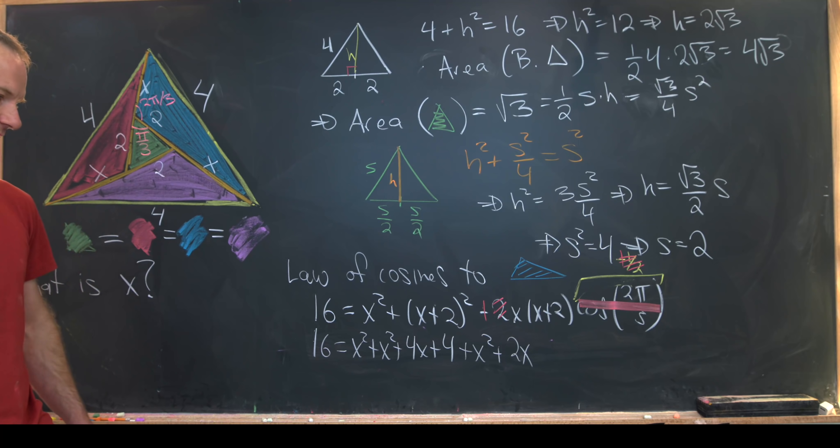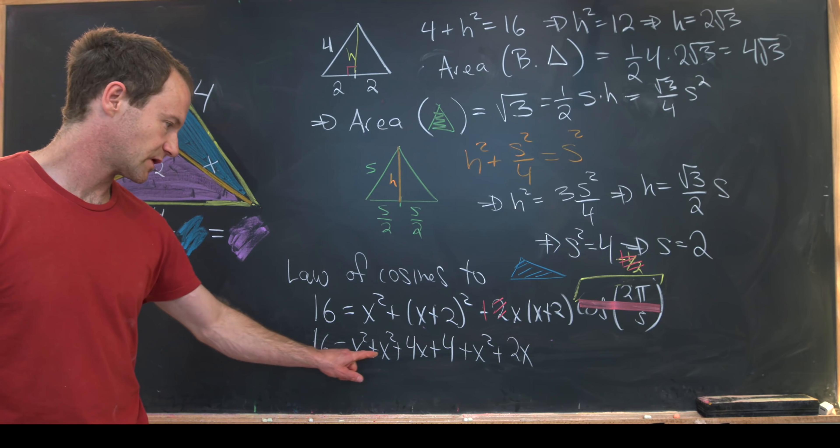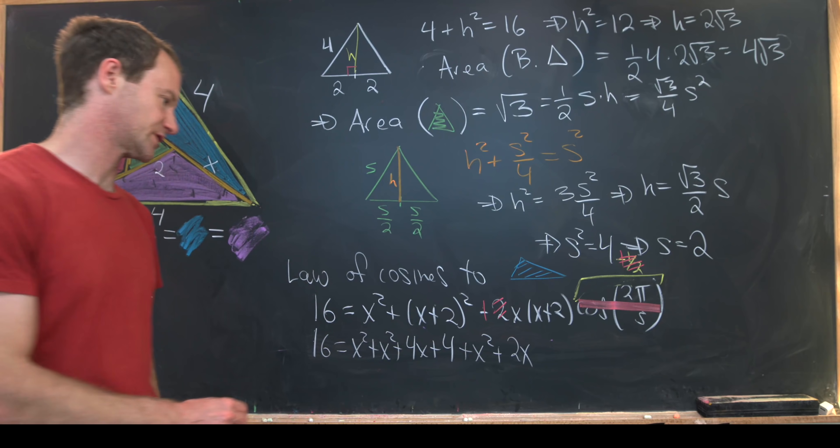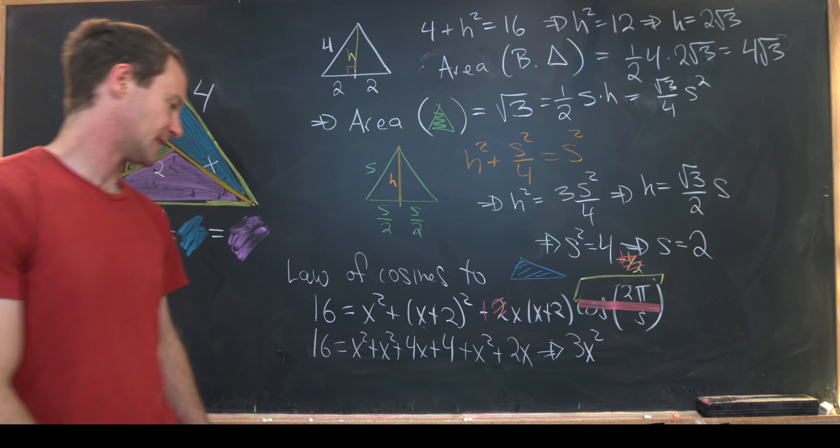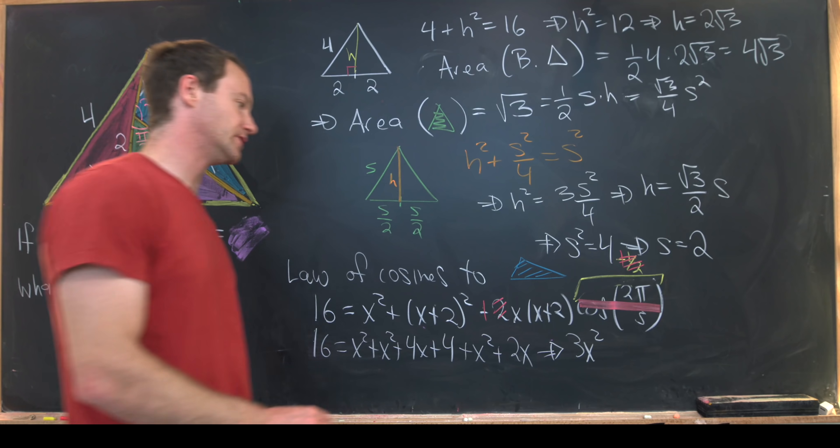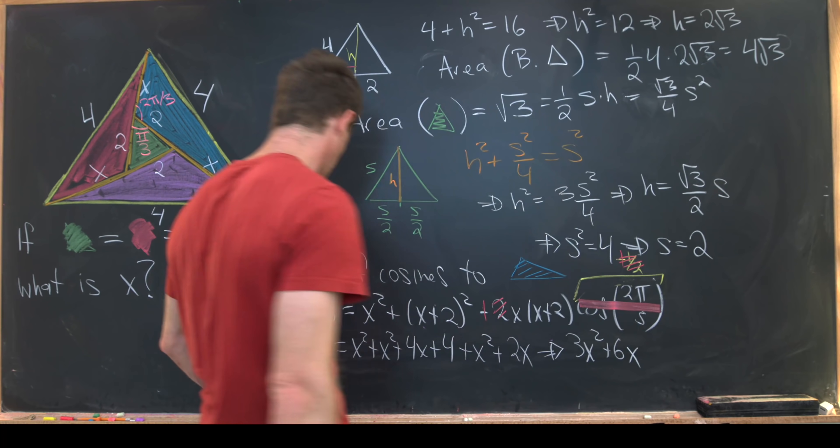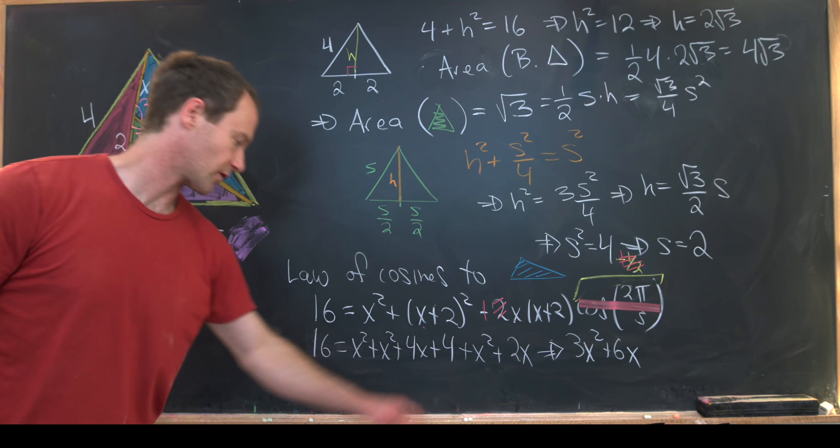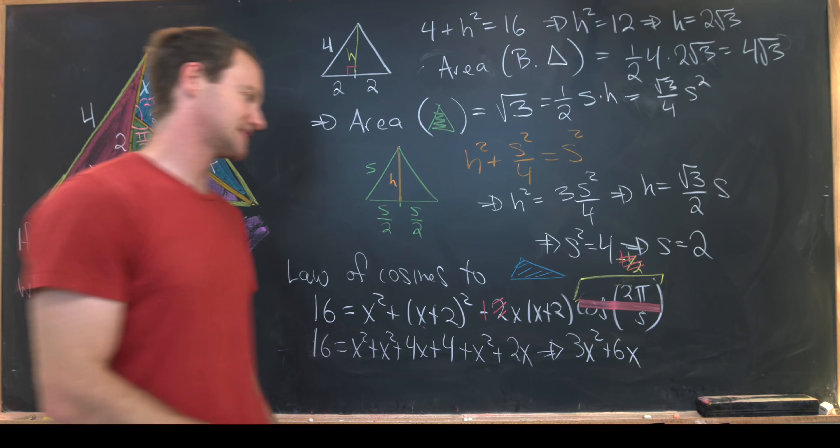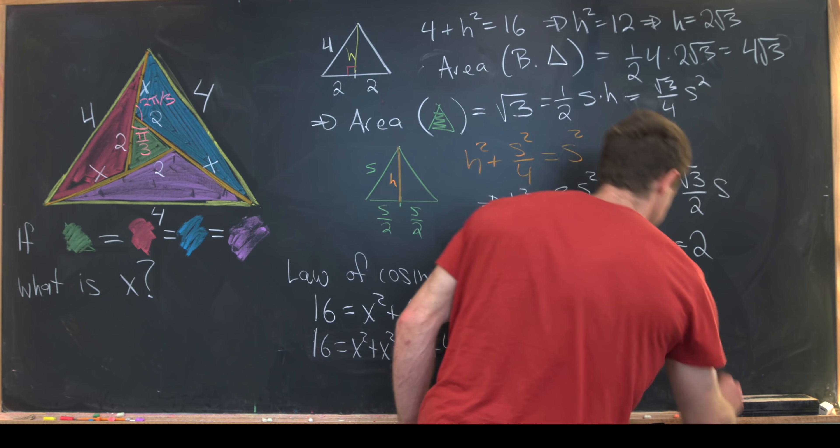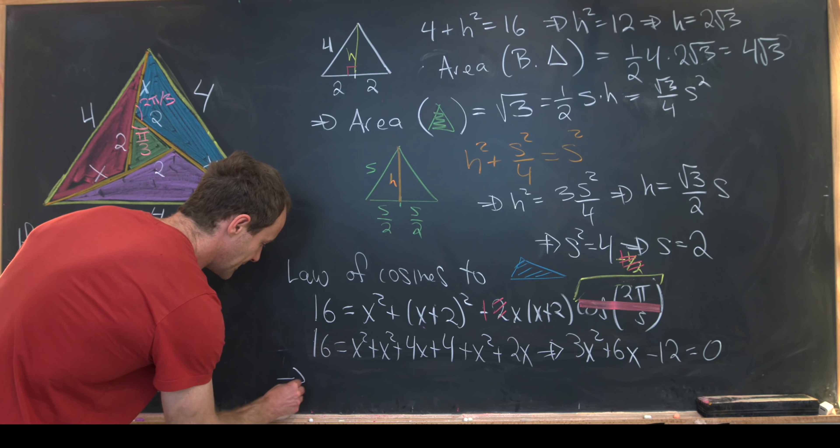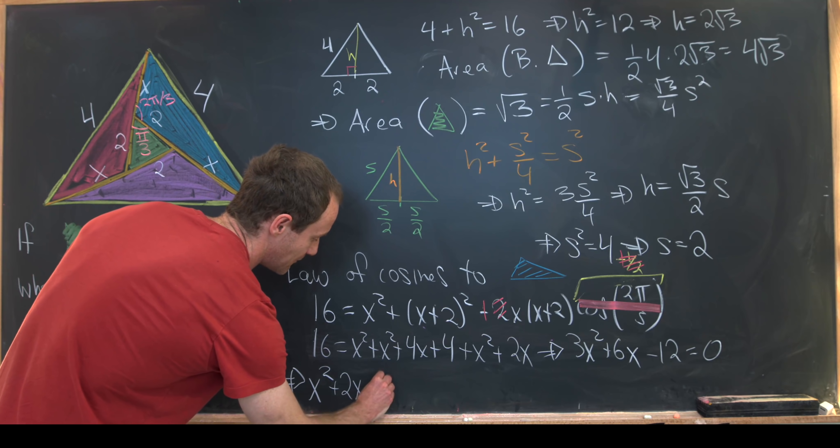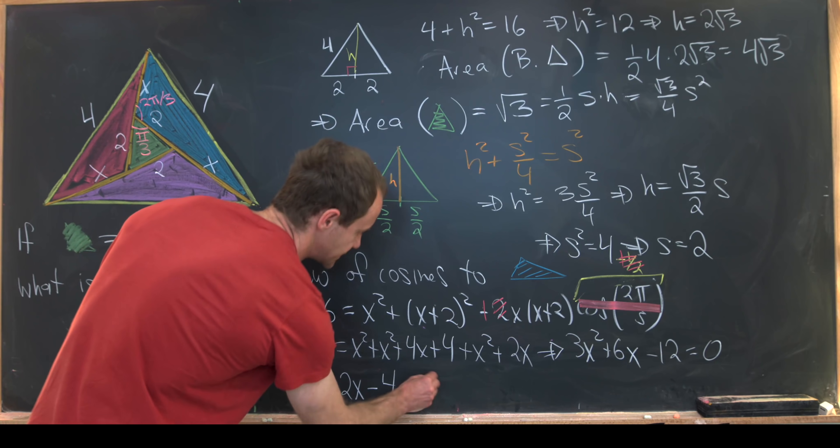Now let's get to simplifying this thing. So we've got x squared plus x squared plus x squared. So that is going to be 3x squared. And then we have 4x plus 2x. That's 6x. And then we can move this 16 over. We'll have 4 minus 16. That's negative 12 equals 0. Now we can factor a 3 out of that. And that leaves us with x squared plus 2x minus 4 is equal to 0.